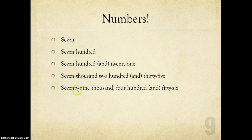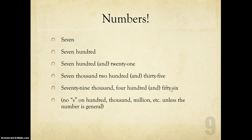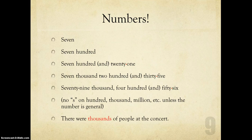Seventy-nine — so seventy-nine is before one hundred. Seventy-nine thousand four hundred and fifty-six. There is no S on hundred, thousand, million, etc., unless the number is general — for example, there were thousands of people at the concert.